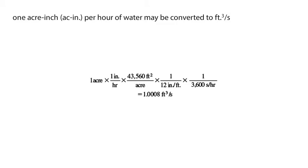One acre-inch per hour of water may be converted to cubic feet per second as follows. The rate computed by the rational method is therefore dimensionally incorrect by 0.8%. This is generally ignored, since, as previously stated, the field of hydrology is not an exact science.